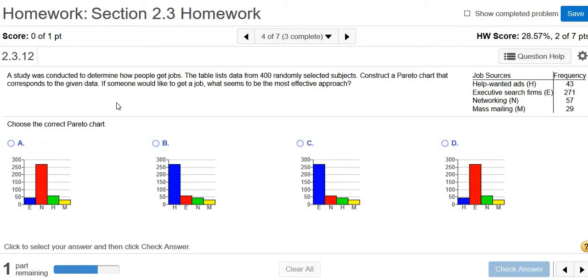A study was conducted to determine how people get jobs. The table below lists data from 400 randomly selected subjects. Construct a Pareto chart that corresponds to the given data.